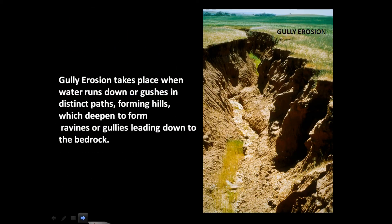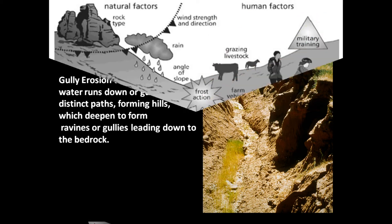The next type is gully erosion. Gully erosion takes place when water runs down or gushes in distinct paths, forming rills which deepen to form ravines or gullies leading down to the bedrock. This gully erosion creates areas of badlands which cannot be put to any use until soil restoration takes place. Such gully erosion is prevalent in plateau countries, especially in the Chambal valleys.